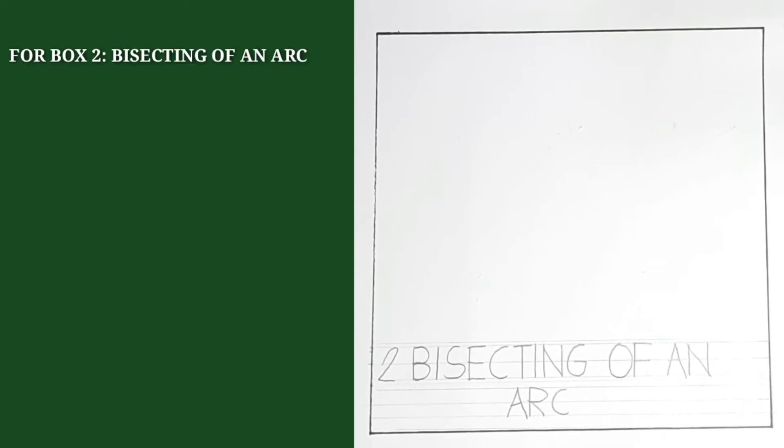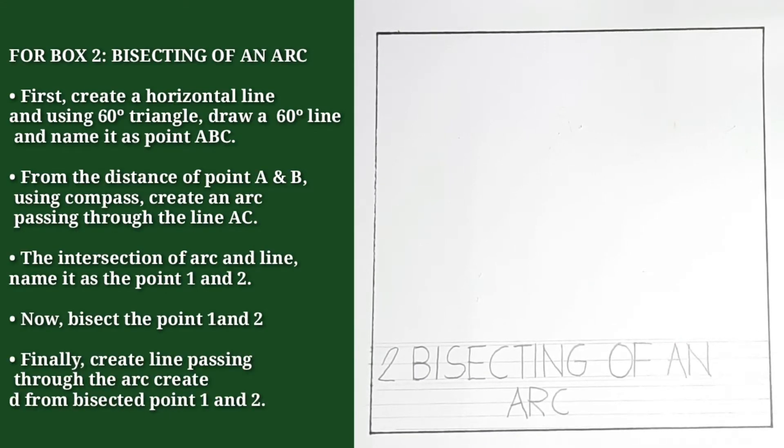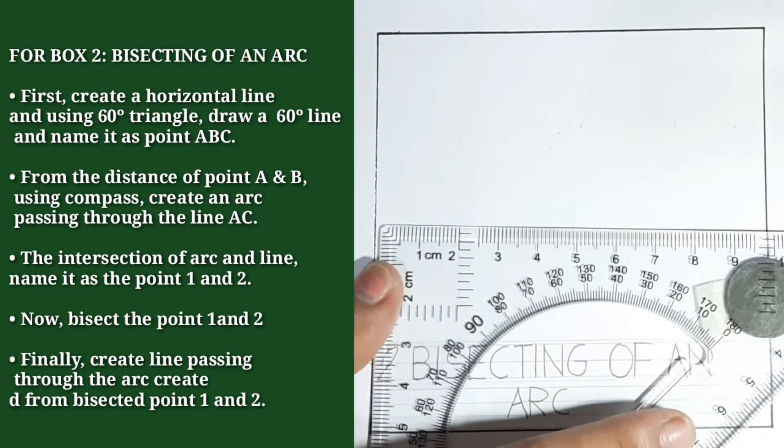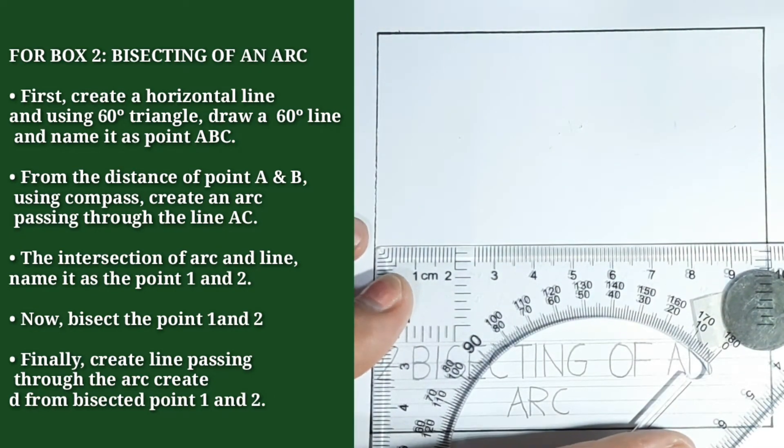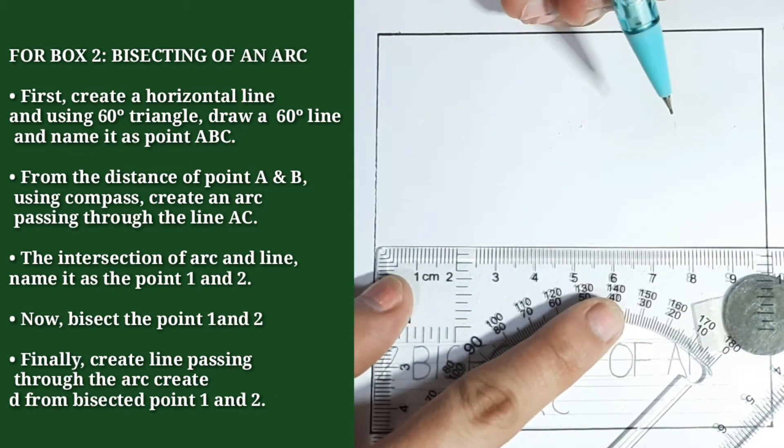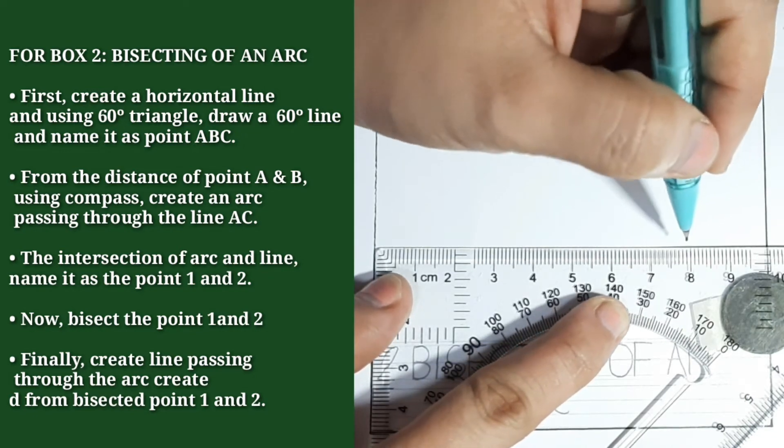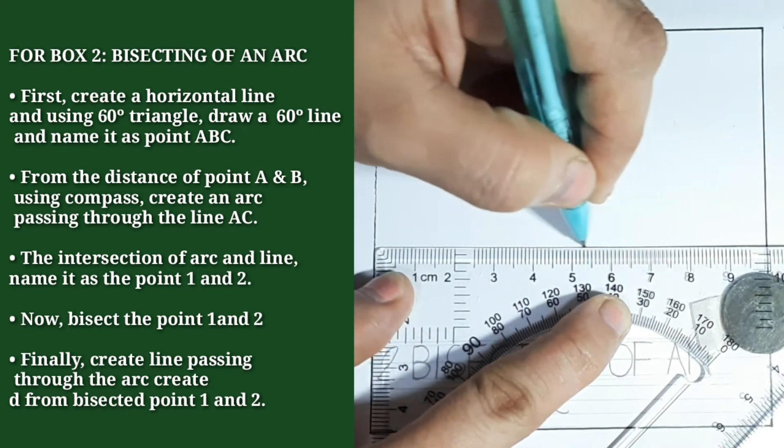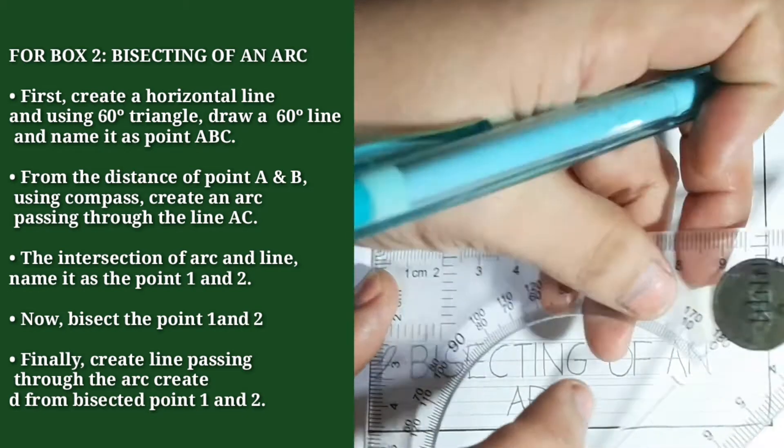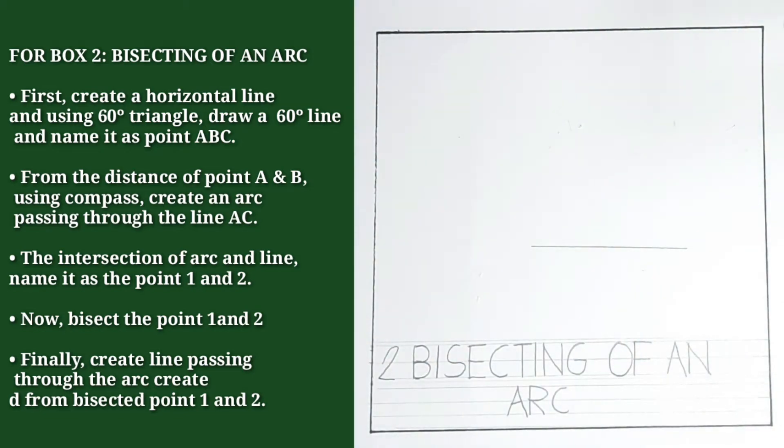For box two, we will be creating a bisecting of an arc. First, create a horizontal line. And from that line, we will create a 60 degrees using the 60 by 30 degrees triangle.